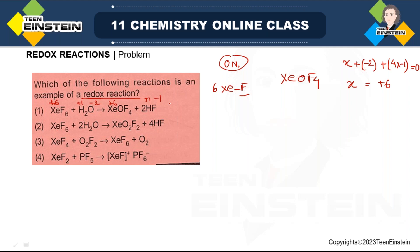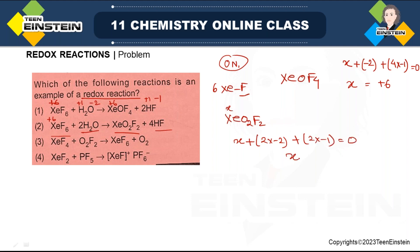The second reaction also has XeF6 and water, so xenon is again plus six. For the product XeO2F2: setting up the equation with two oxygen atoms (minus two each) and two fluorines (minus one each) gives xenon as plus six again. So there is no change in oxidation number here either — not a redox reaction.